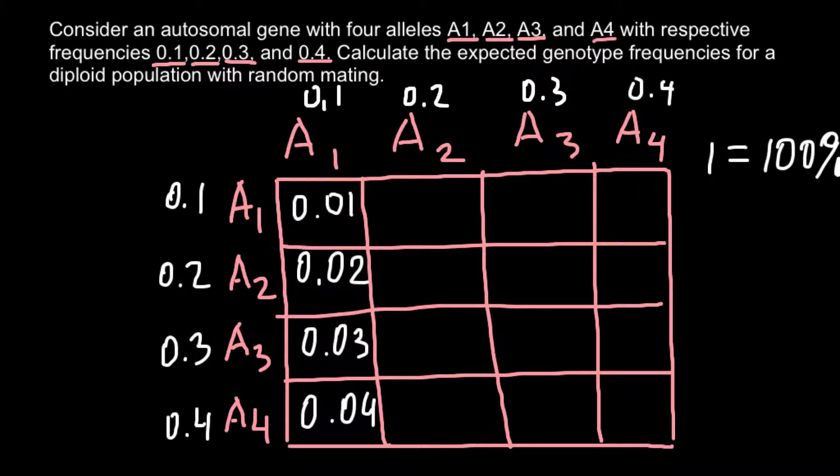The next column would be: we have to multiply the frequency of the A1 allele with the frequency of the A2 allele. So this is going to be 0.02, 0.04 here, 0.06 here, and 0.08 here.